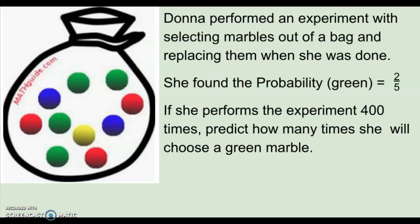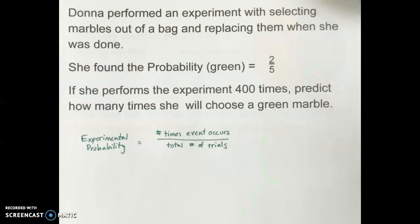In our first example, Donna performed an experiment with selecting marbles out of a bag. She replaces the marbles when she's done. She found that the experimental probability of choosing a green marble was two out of five. If Donna performs the experiment 400 times, predict how many times she will choose a green marble. So if she found that the probability of selecting a green marble was two fifths, what that really means is that she picked a green marble two times out of every five times that she performed the experiment.